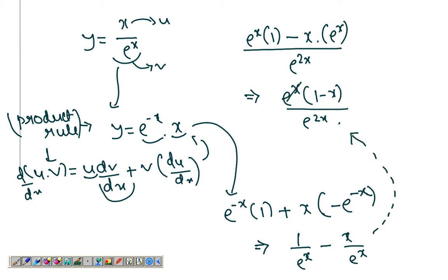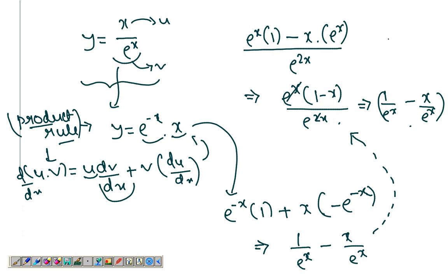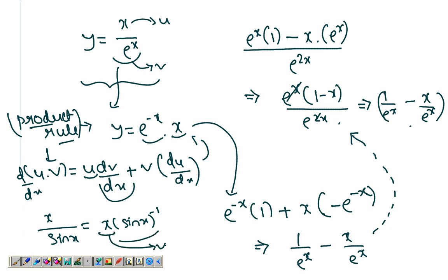And isn't this equal to the previous result? Cancelling out, it gives you the same thing. So you can always use the product rule for questions which may also involve the quotient rule. Like in the previous example, we had x over sin x — we could have written it as x times sin x to the power of negative 1, taking this as u and this as v, and used the product rule there.